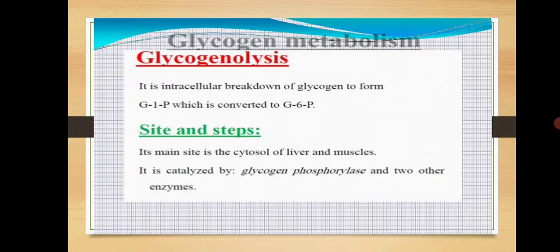There is a breakdown of glycogen into glucose residues. In this process of glycogenolysis, it is carried out by different enzymes, among which the main one is phosphorylase. This phosphorylase converts glucose-1-phosphate into glucose-6-phosphate through different intermediate steps.